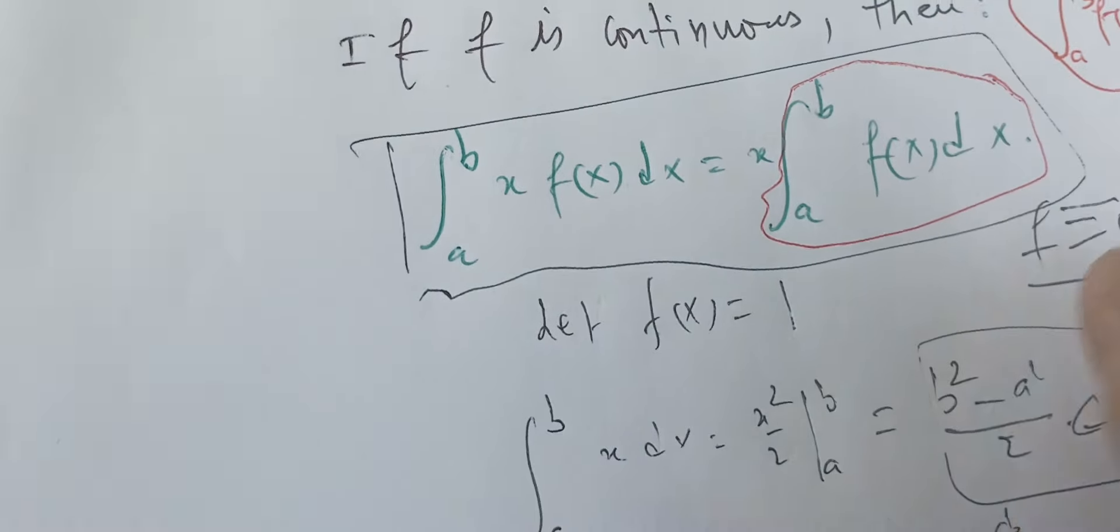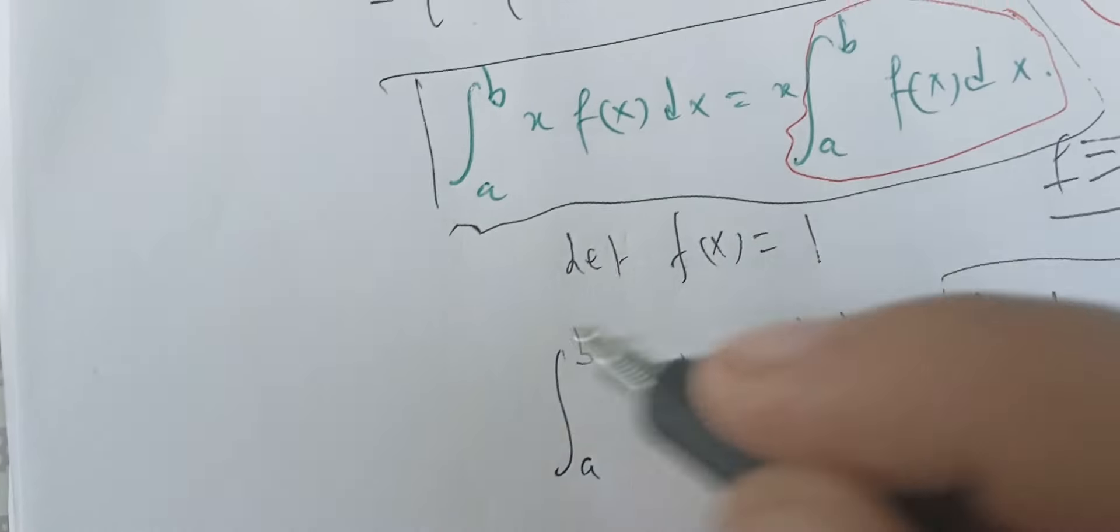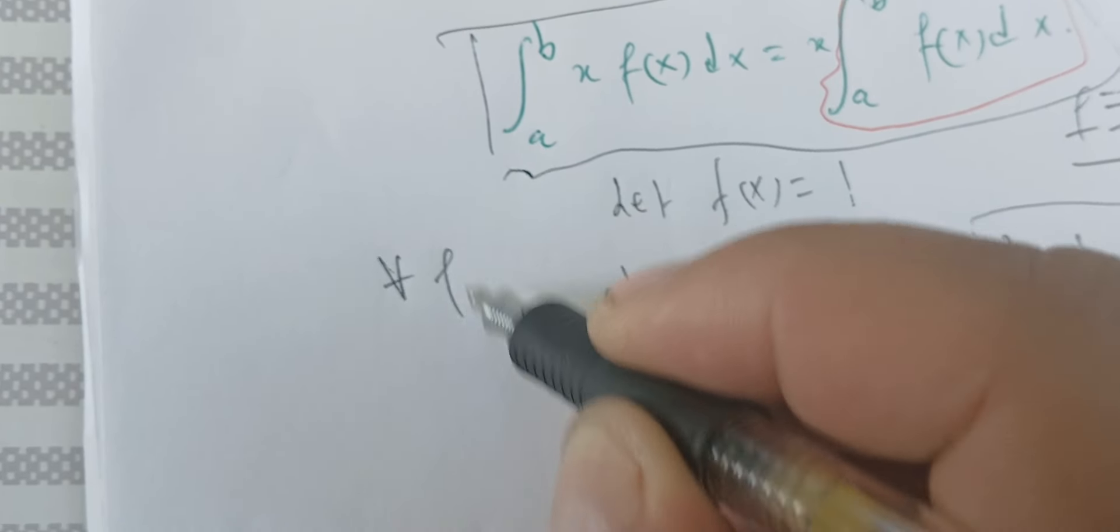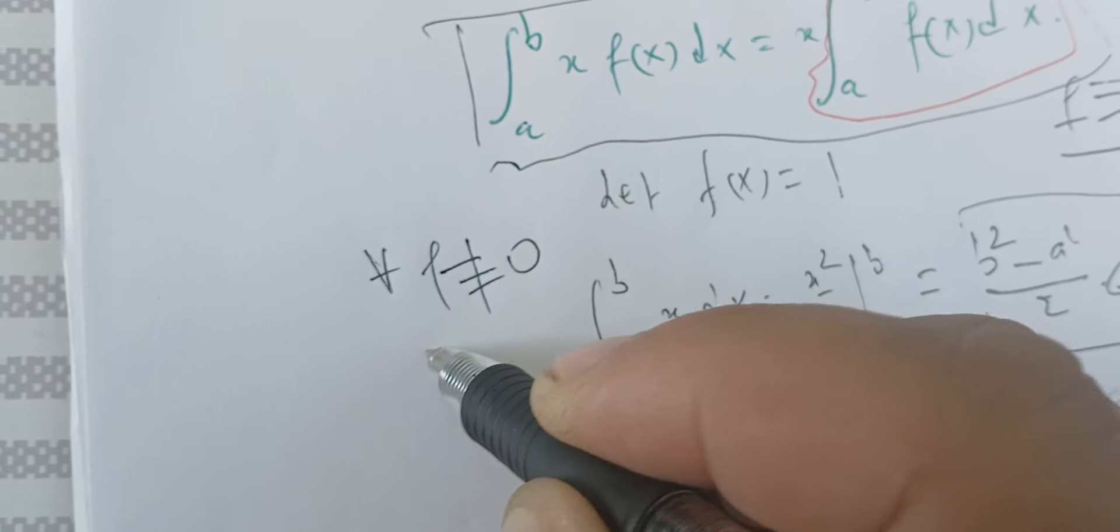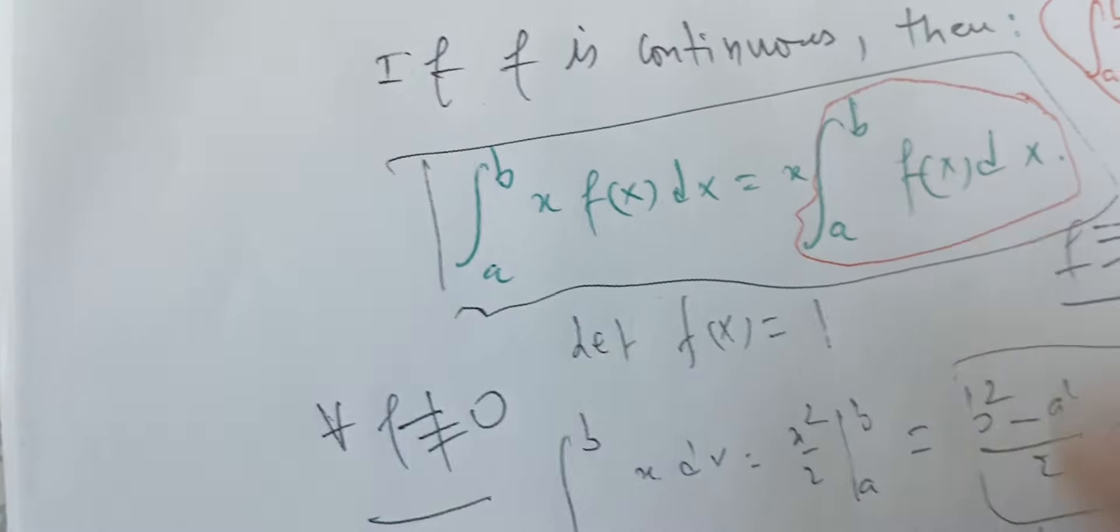Therefore, to make this one clearly true, we say that for all f different from the zero function, this one is always false. We can never have this.